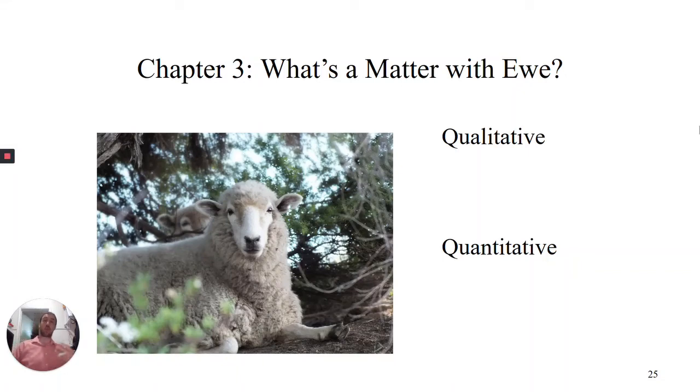We already looked at this image before and talked about the differences between qualitative and quantitative. If we are a tailor, we might care about the qualitative aspect of the wool. If we're a butcher, we might care about the weight of the sheep before it gets butchered because we're looking for different things.